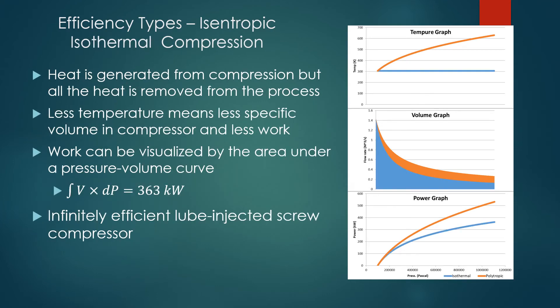The other type of theoretical compressor model is isentropic isothermal compression. In this form of compression, all heat generated by heat of compression is rejected to a heat exchanger. This allows the temperature of the compressed air to remain constant while the pressure increases. Less heat in the compressed air means less specific volume, and less specific volume means the compressor can compress air with less required work. The area under the volume-pressure graph represents the amount of work required. Because heat rejection is included in this model, it more closely resembles a lube-injected screw compressor. An actual lube-injected screw compressor would not be able to completely reject all heat generated, so it would fall somewhere between the two theoretical models.